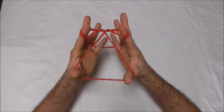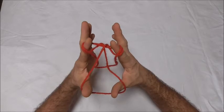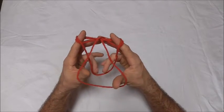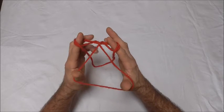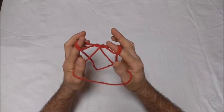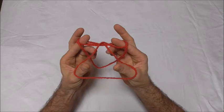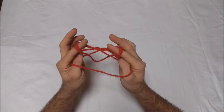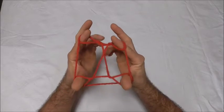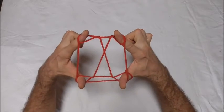Then I want to release the little fingers gently but don't pull it tight. We want to leave this loop hanging down here. Then I want to use my thumbs to pick that loop up from below on the outside of these diagonal strings. It should look like that now.